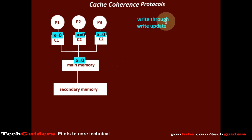When write-through is used with write-update, whenever the data is updated in some local cache, it will correspondingly be updated in the shared memory. Also, the updated value will be broadcasted to all other local caches, so any local cache having the shared location will update the value. Thus every write requires an update in the shared memory, and the new value must be broadcasted to all other local caches.